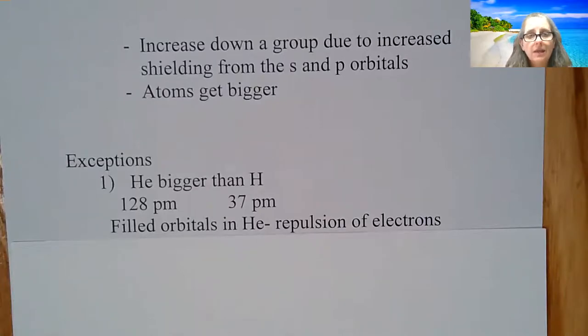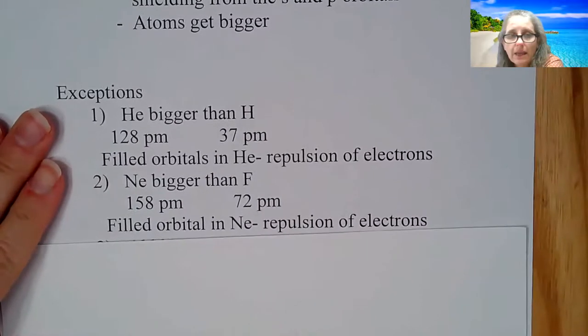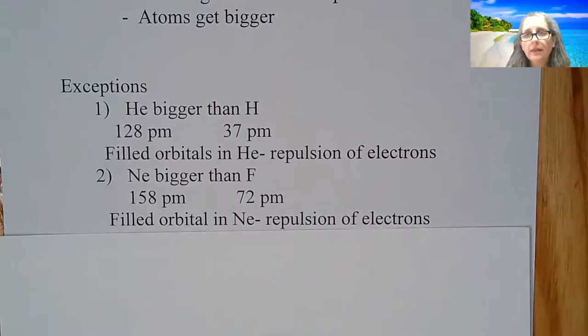So helium tends to be bigger than hydrogen. So if you actually look at their picometers, it's about 128 to 37. You don't need to know the numbers, but understand that a filled orbital, you have more of what we call electron repulsion. So that's why you see that with some of the noble gases, they tend to be a little bit bigger than their neighboring atom.